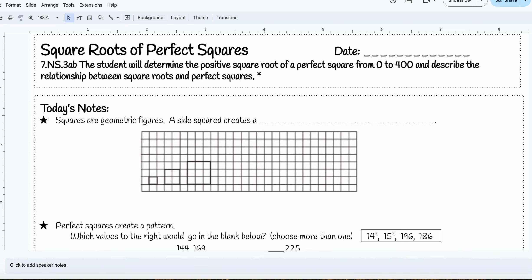So squares are geometric figures. A side squared creates a perfect square.